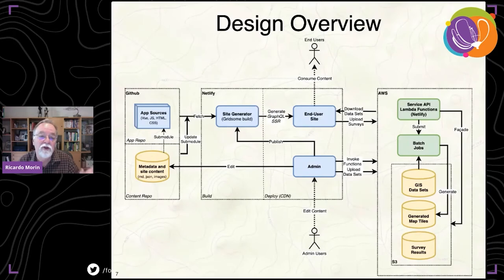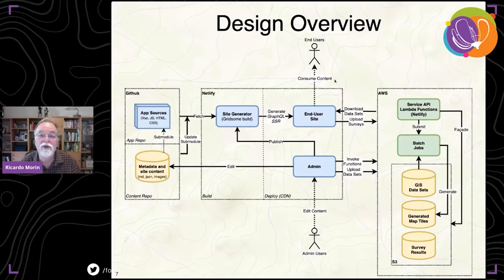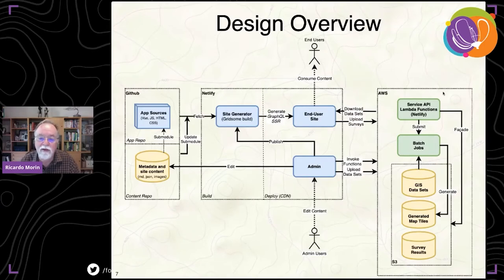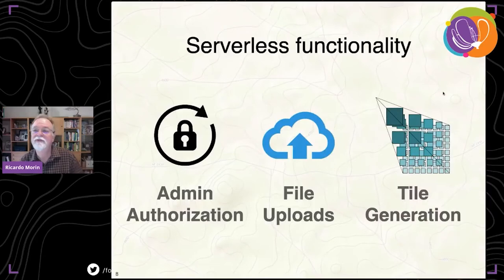Gridsome does server-side rendering at build time and provides a GraphQL layer you can use for build-time queries to build the pages. The end result is that about one or two minutes after you hit publish, you have the new site completely deployed and the cache refreshed — it's almost real time for the user consuming the content. On the right side we have the AWS platform where we keep the files and run compute-intensive batch jobs to generate the tiles you saw on the map preview. We front-end all of that with lambda functions, which is our service API.